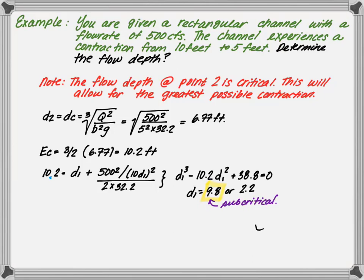So at point 2 we have a depth of 6.77 feet, and at point 1 we have 9.8 feet. I hope these examples help you see the importance of specific energy, critical depth, and minimum energy within the understanding of expansions and contractions.